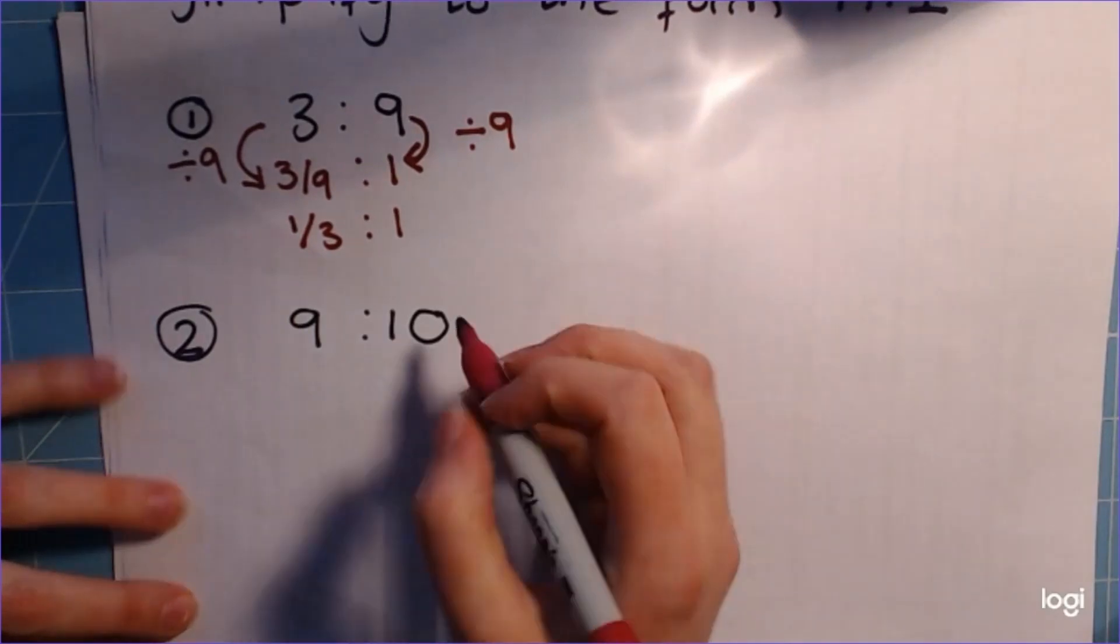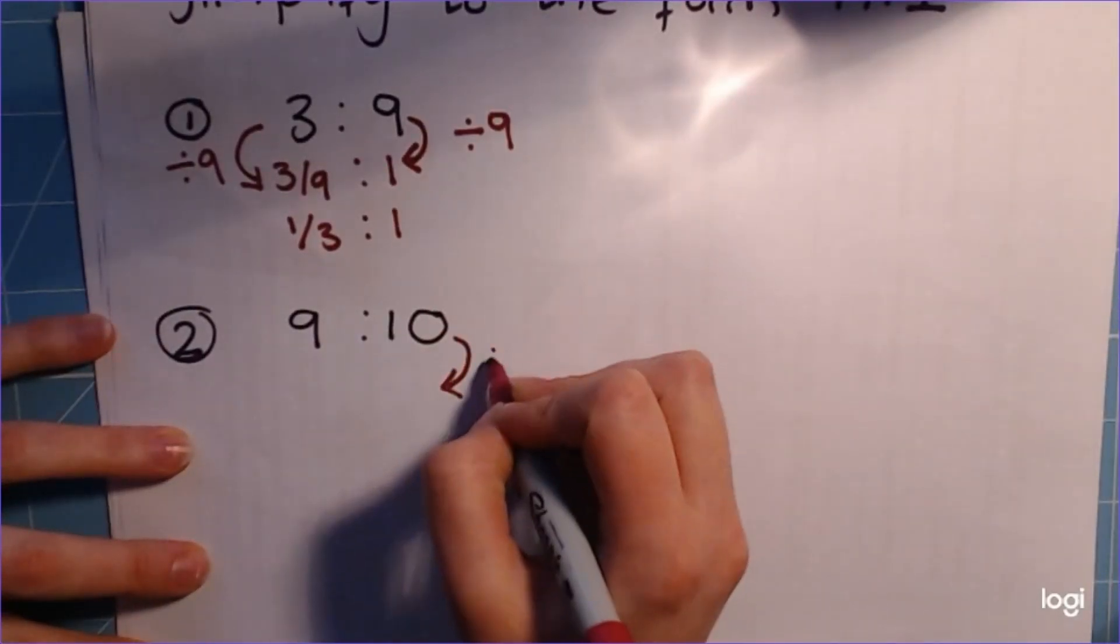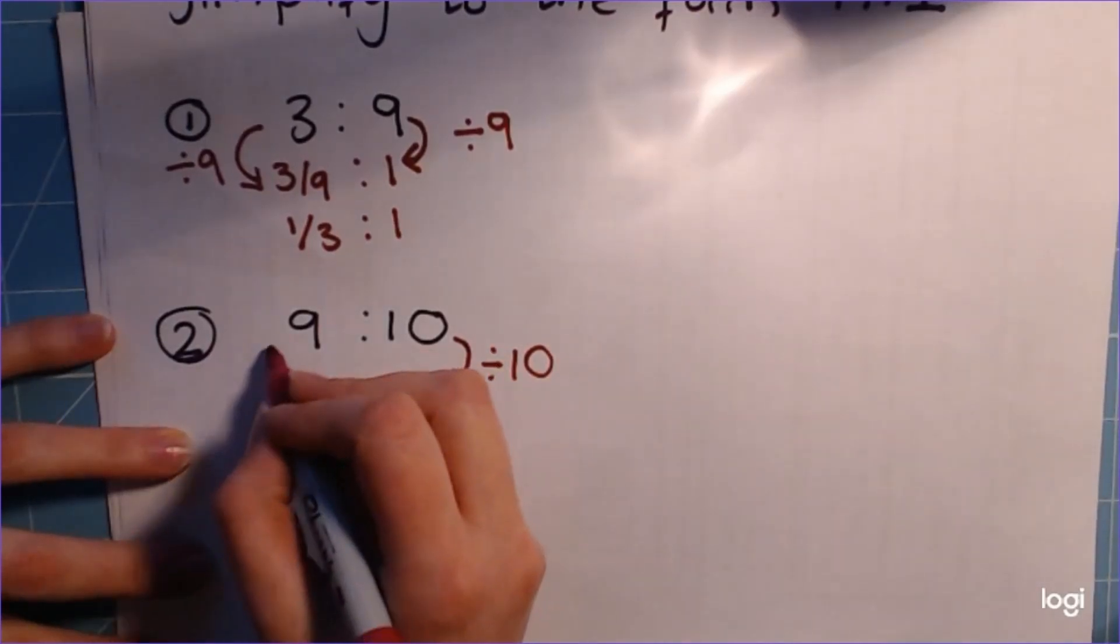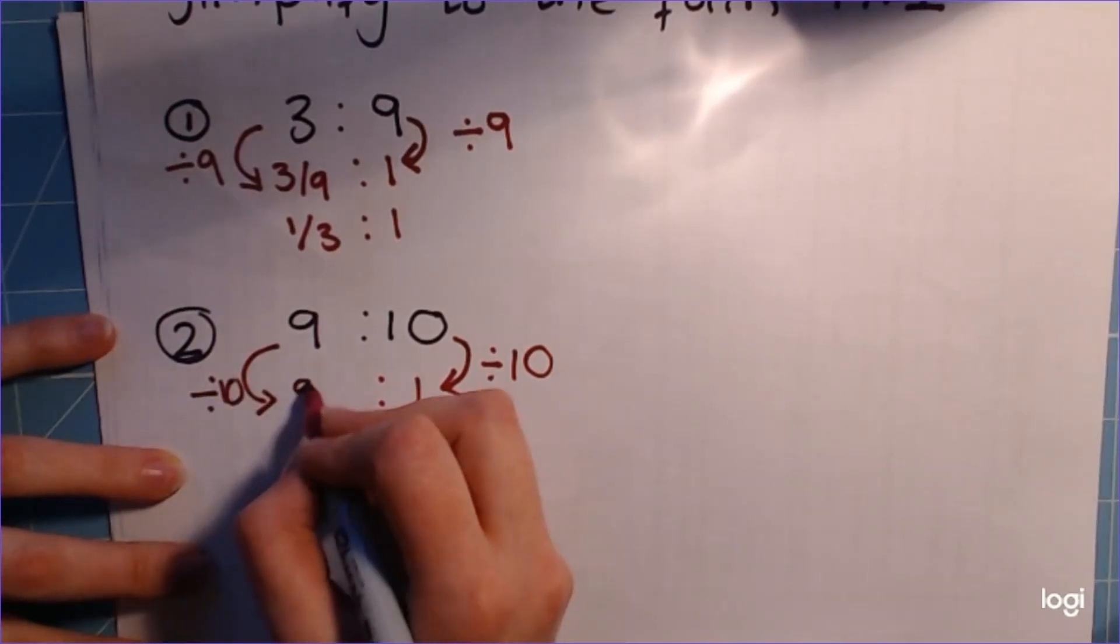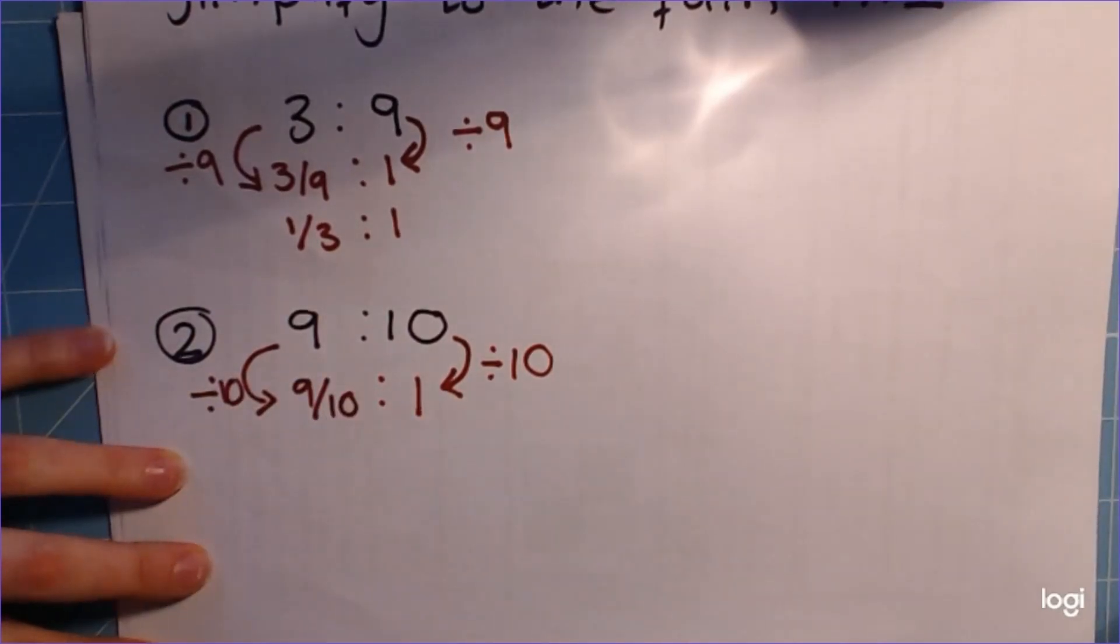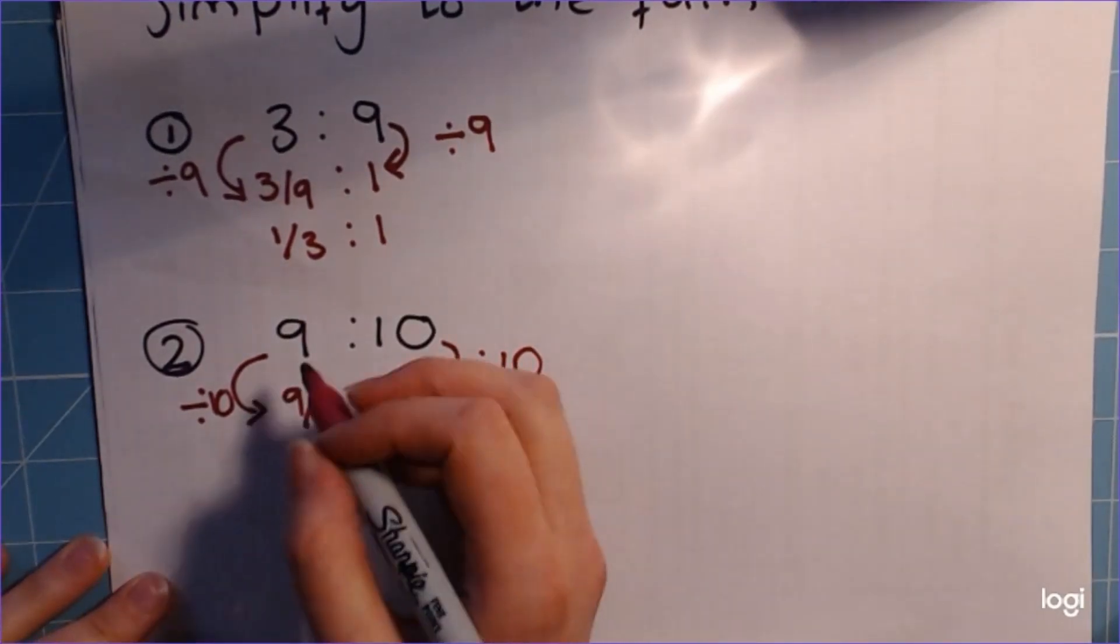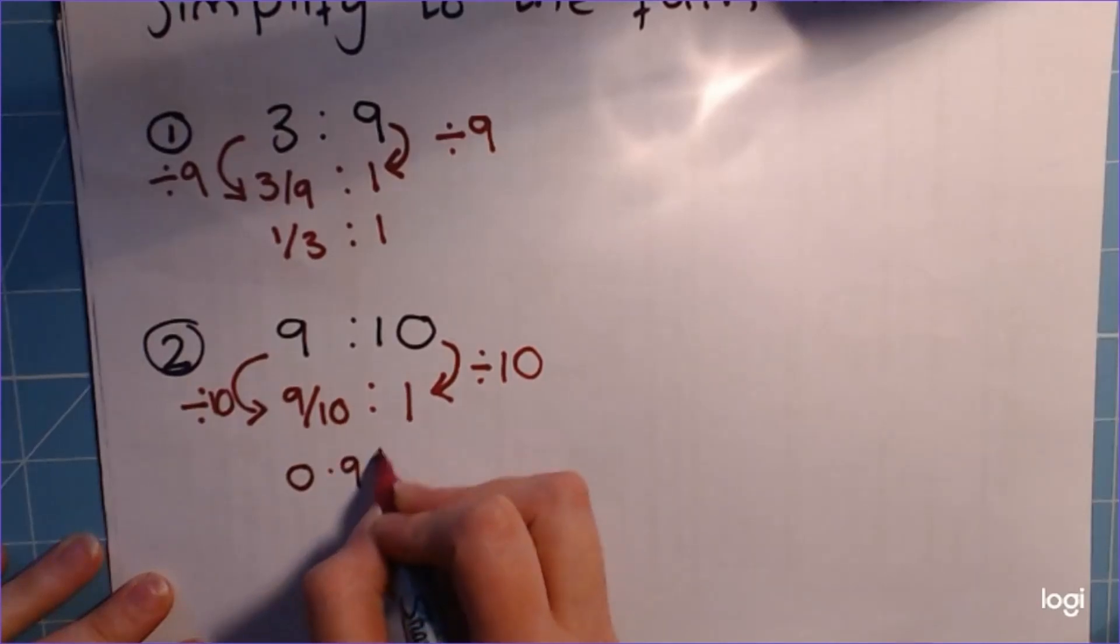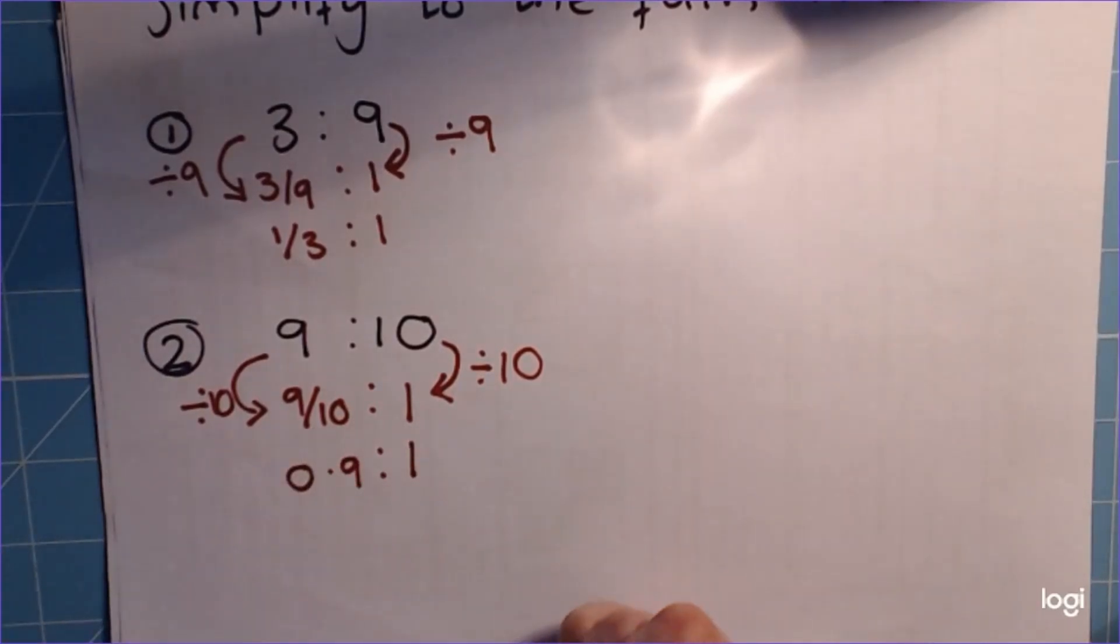And just one more example, make sure we've really got it. This time we're looking for the 10 to become the 1, so we're dividing by 10, which gives 1. And 9 divided by 10, which gives us 9/10. That can't be simplified any further, which is absolutely fine. You can convert these into decimals if you want, if they work out nicely. So here we could have 0.9 to 1. It's fine in either a fraction or a decimal.